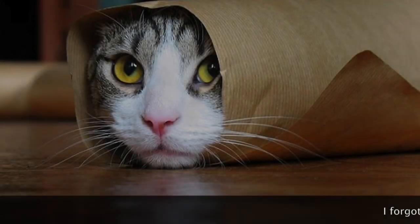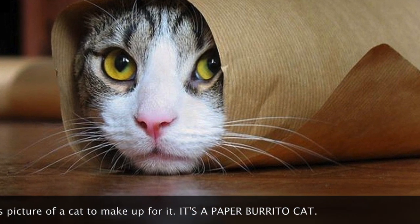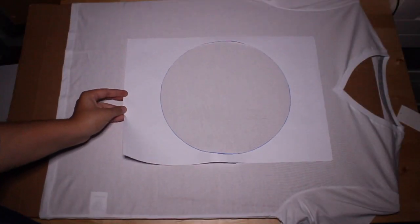The first thing I did was put a piece of cardboard inside the shirt to make it as flat as possible and protect the back of it and the table. Then I made a stencil of a circle and taped it in place on the shirt.